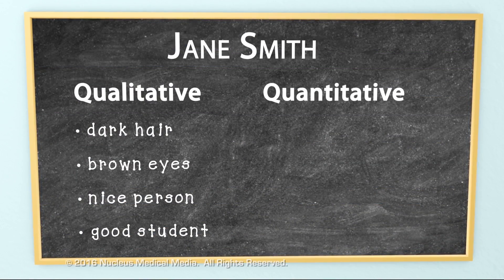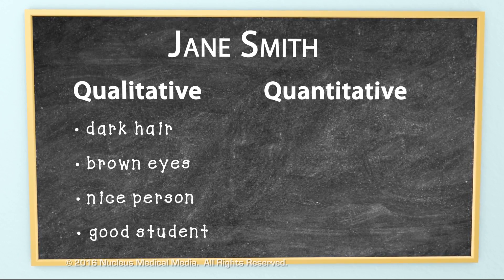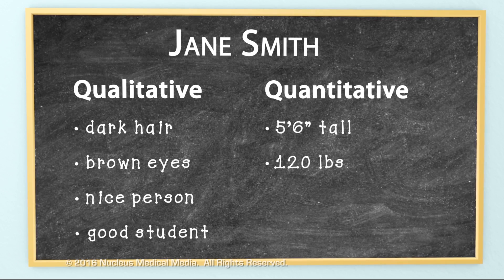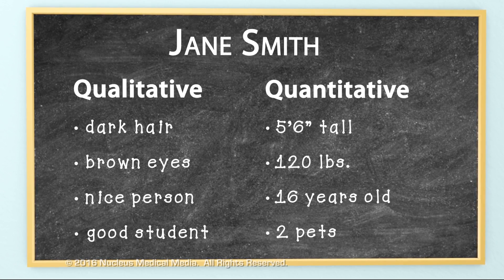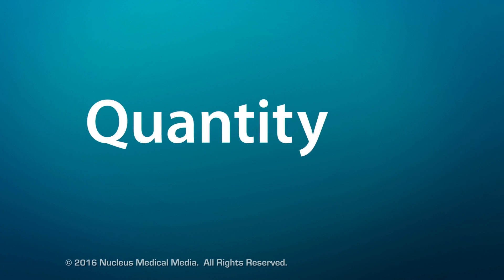Let's talk about quantitative data. Unlike qualitative data, quantitative data contains numbers obtained by counting or measuring. Notice the word quantitative has quantity embedded in it.